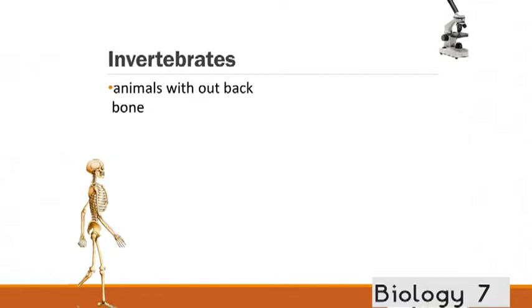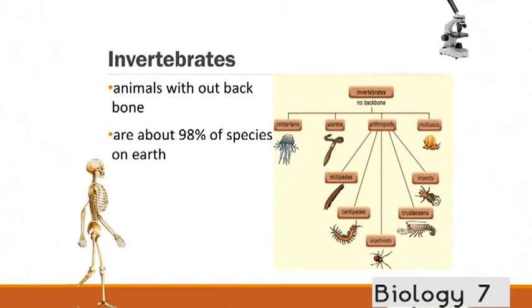Then we move on to invertebrates. Remember, these are the ones without the backbone. And there's about 98% of the total number of species on Earth are actually invertebrates, which is a huge portion. Here are some examples of some of those. Jellyfish is the cnidarians. There's also mollusks. There are also sponges, worms, crustaceans, spiders. Lots and lots of animals do not have a backbone.